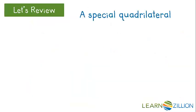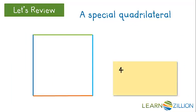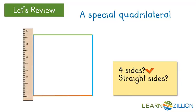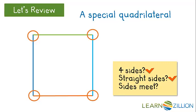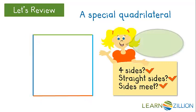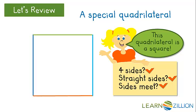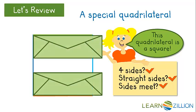We learned about another special quadrilateral called a square. We know that this shape is a quadrilateral because it has four sides, each of its sides are straight, and all of the sides meet at a corner or vertex making a closed shape. This quadrilateral is called a square because all of the sides are the same length or size, and the top and bottom run in the same direction, the same distance apart, and the left and right sides run in the same direction, the same distance apart. Each of the corners are square corners, meaning I could put a piece of paper into each of the corners and it would fit.